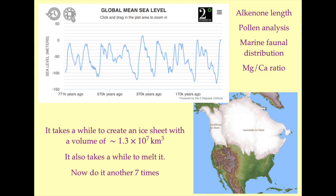Using paleoclimate proxies, we can achieve some separation between the ice volume component and the temperature component of the oxygen isotope signal. Having separated out the global ice volume component, we can then reconstruct an approximate global mean sea level curve. Each oscillation corresponds to accumulations of mass within land-based ice sheets and the subsequent release of that mass back into the ocean basins. The North American ice sheet complex at its maximum during the last glacial cycle covered most of Canada and was at its thickest point more than 4,000 meters — or two and a half miles — thick. Transporting that much water from the ocean basins into an ice sheet is not a quick process, neither is melting it. Yet the ice core oxygen isotope data tells us this process happened eight times in the time it took for the last 880,000 ice layers to form.